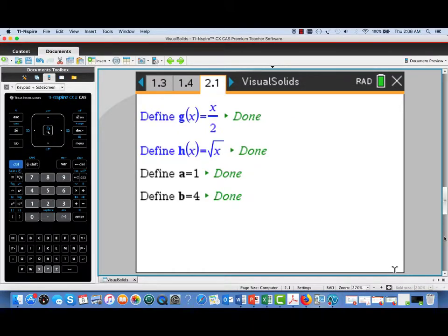I'm going to start out here on a notes page where I've defined a couple of functions. G of x equals x over 2, and I've also defined h of x equal to the square root of x. Now, I've also defined a couple of bounds. These will serve as values for x equal a constant, a equals 1 and b equals 4. And these will serve to bound a region that we'll look at in the plane.